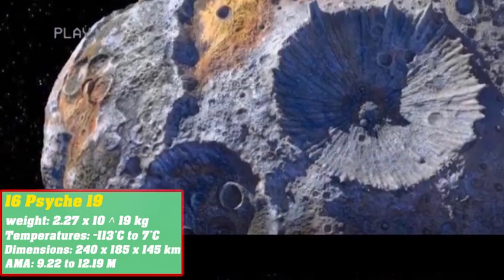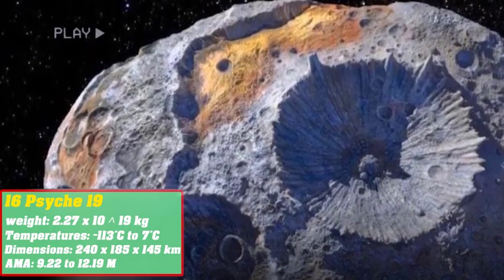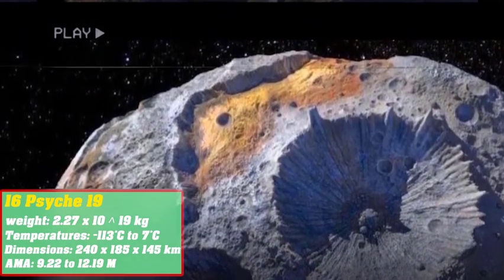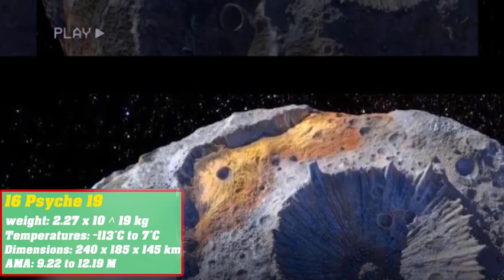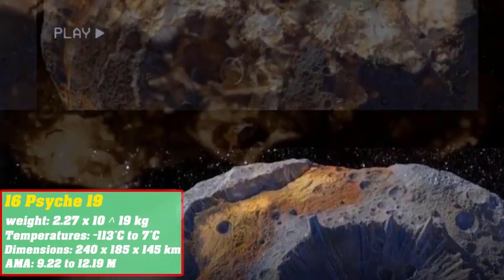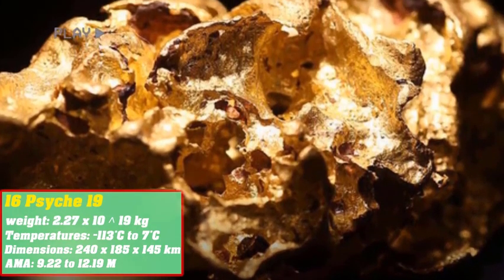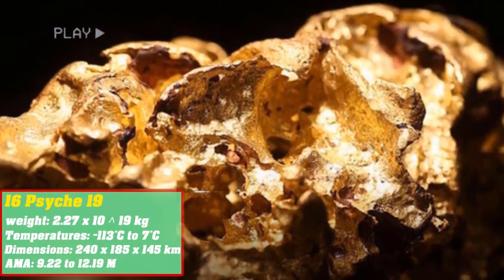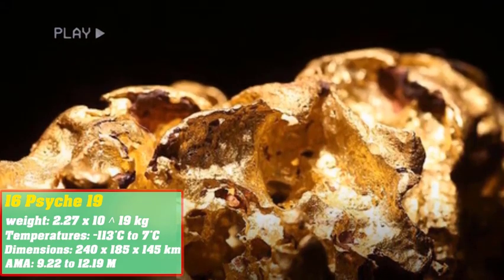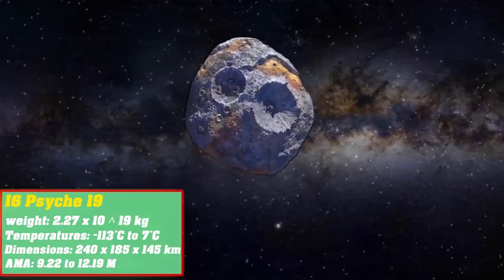In terms of location, this asteroid is somewhere between Mars and Jupiter. Its weight is up to 2.27 times 10 to the 19 kilograms. Temperatures on this asteroid range from 160 degrees Kelvin to 280 degrees Kelvin.